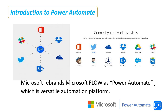Microsoft Power Automate is an online workflow service that automates actions across the most common apps and services. For example, you can create a workflow that adds a lead to Microsoft Dynamics 365 and a record in Mailchimp whenever someone with more than 100 followers tweets about your company.